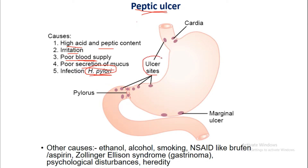Ulcer sites are mostly present in the cardia region of the stomach and at the pylorus, with marginal ulcers also occurring. Other causes include: ingestion of ethanol (alcohol), smoking, NSAIDs such as aspirin, non-steroidal anti-inflammatory drugs, Zollinger-Ellison syndrome — a gastrinoma or gastrin-secreting tumor which increases HCl secretion — and psychological disturbances. All these are causes of peptic ulcer.